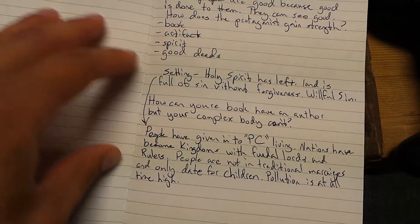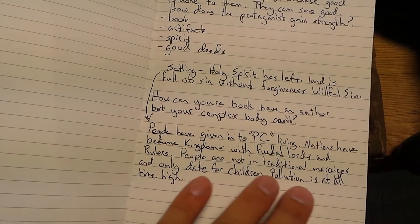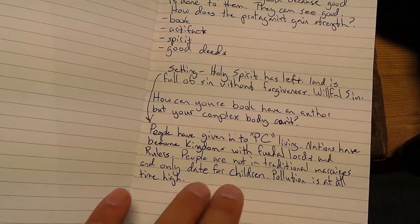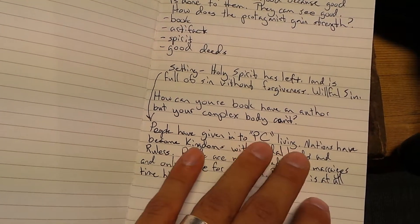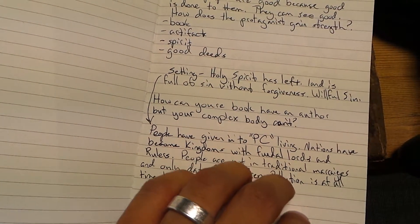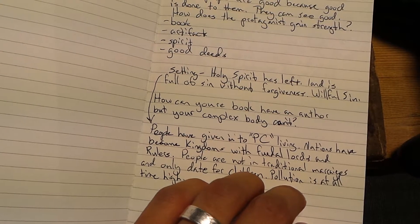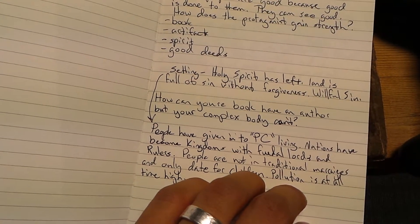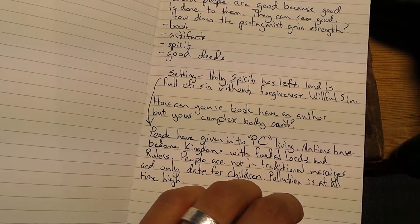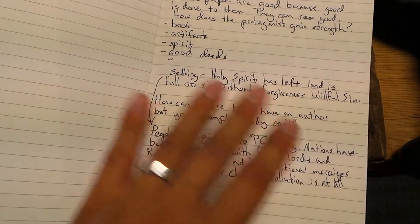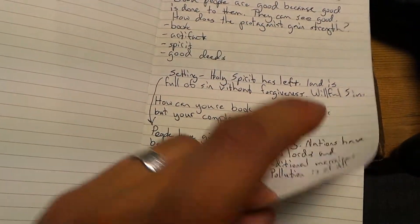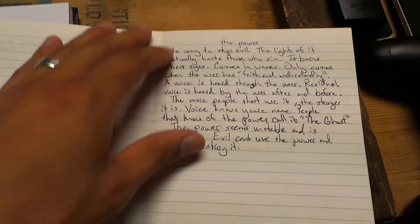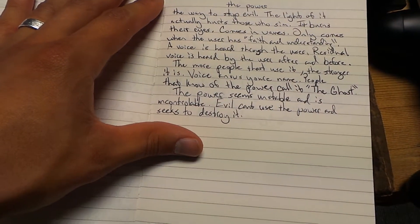Pollution is at an all-time high. People are not having children anymore - they're having children grown for them, so the population is controlled. Everything's being controlled. In this setting you've got this main protagonist and he's kind of a thief.